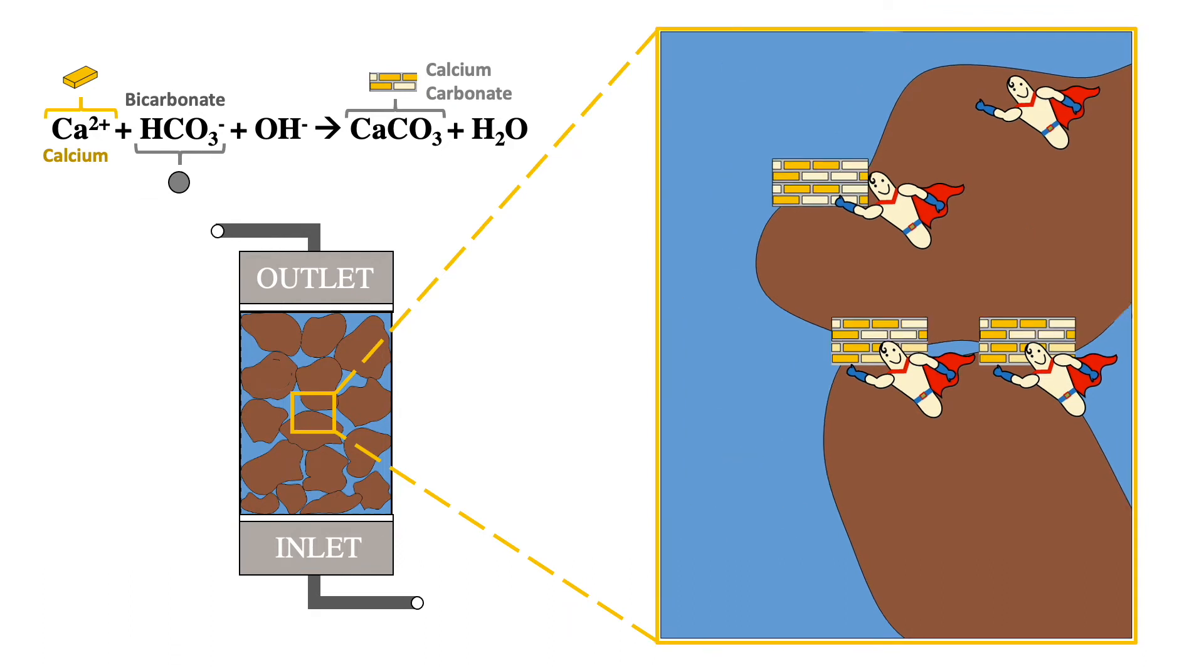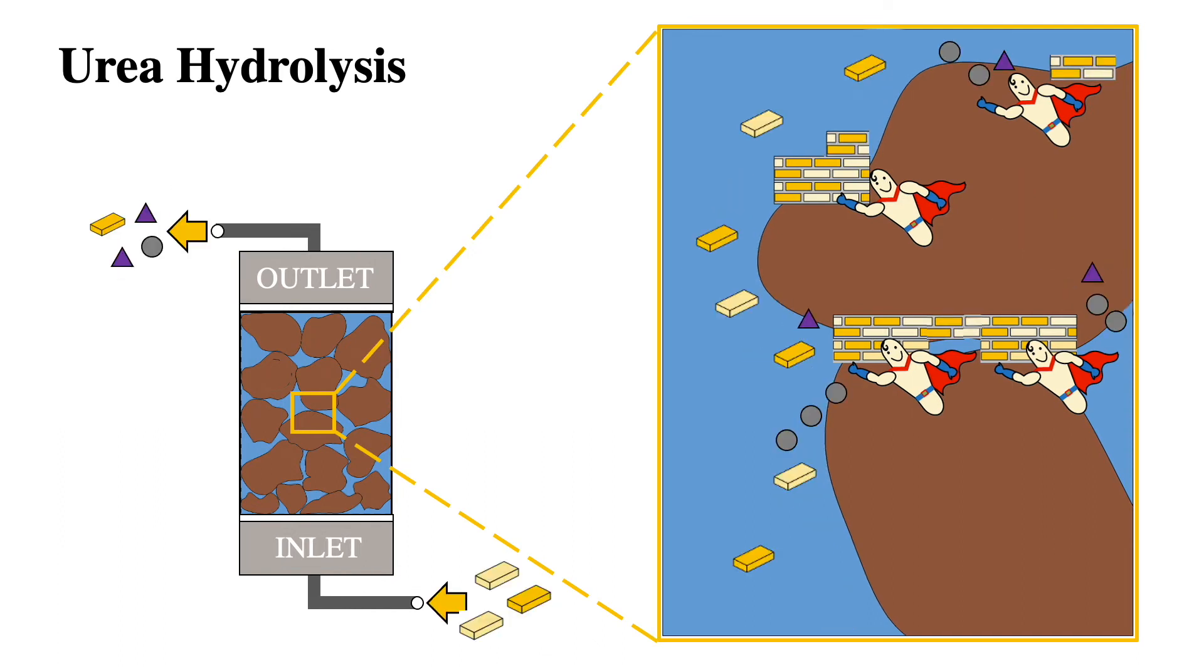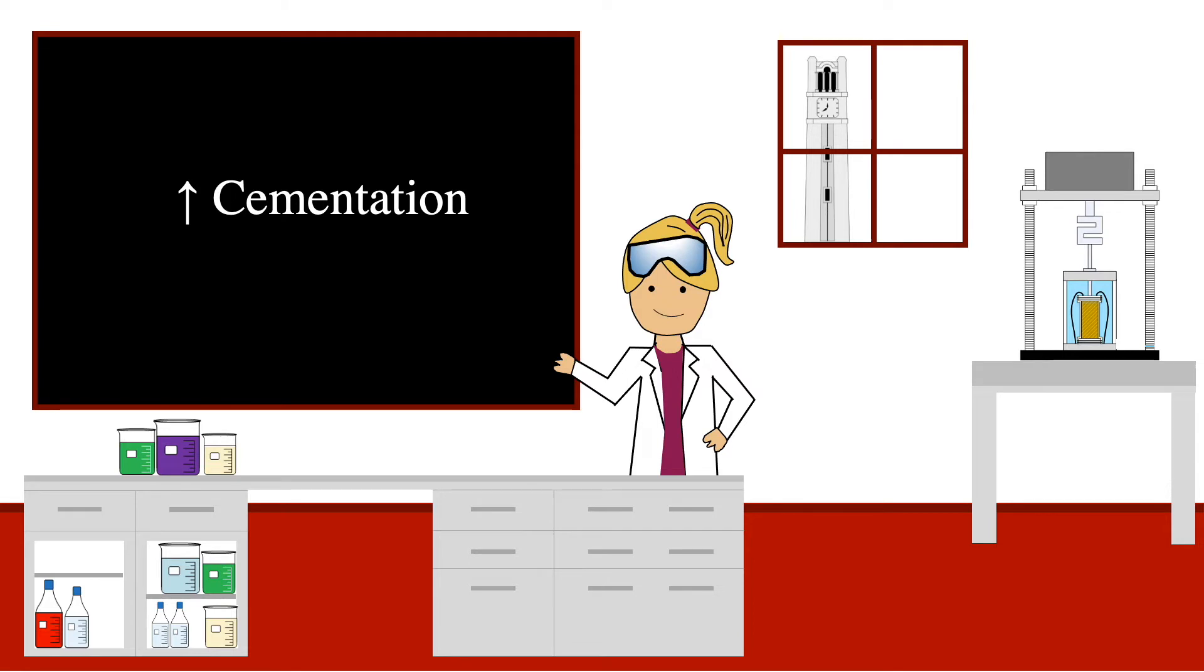This process can be repeated multiple times to create varying levels of cementation, depending on the application. The level of cementation influences the improvement of soil geomechanical properties.